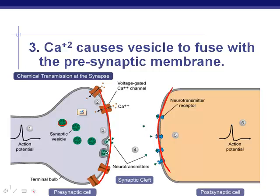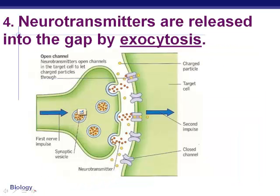Once these vesicles fuse, they release the neurotransmitters across the gap by a process called exocytosis — a term we talked about in unit one. These neurotransmitters make it from one side to the other. The way they cross that gap is by diffusion, because there's a higher concentration on one side and lower concentration on the other.